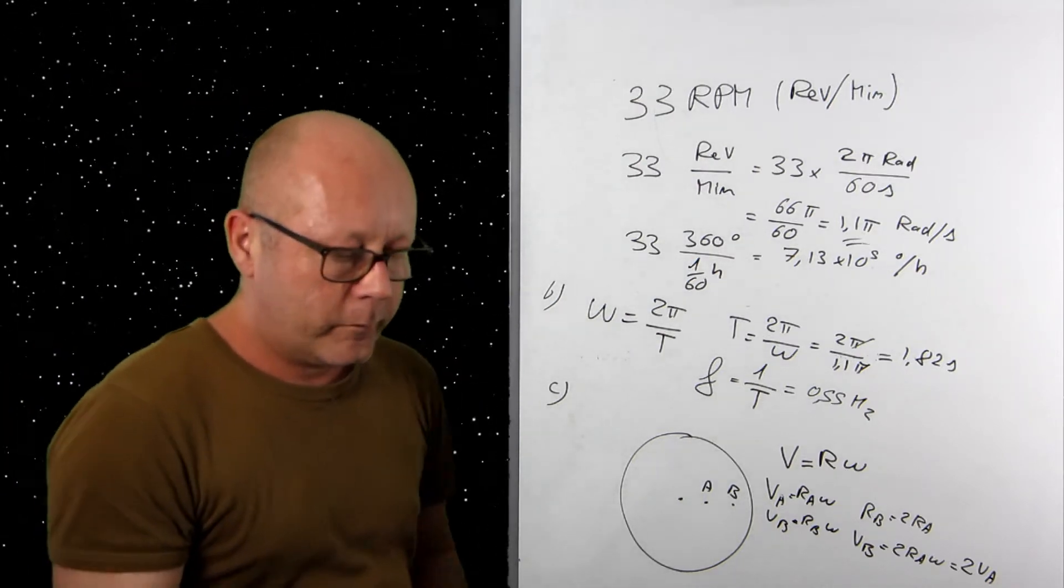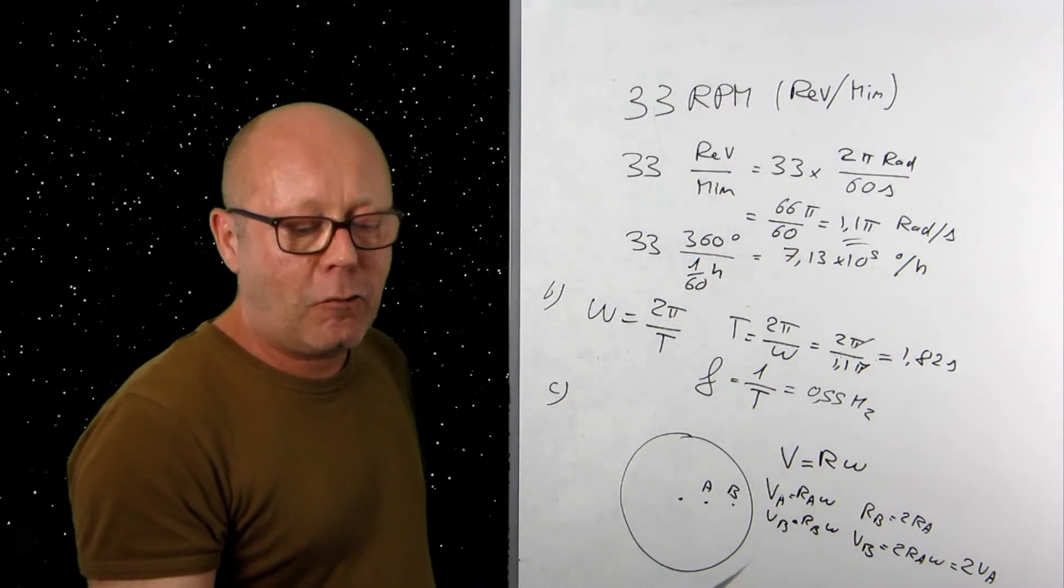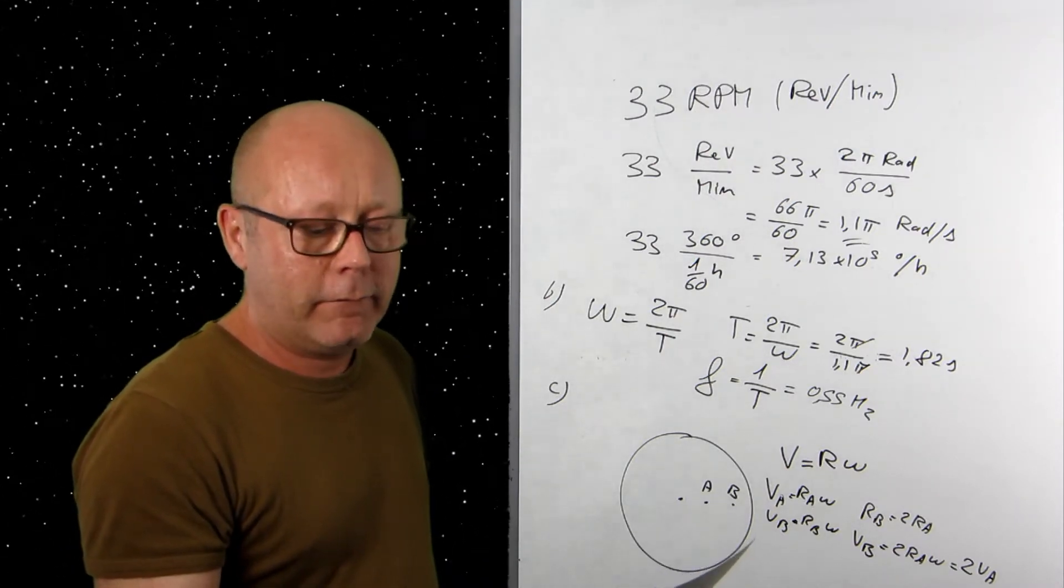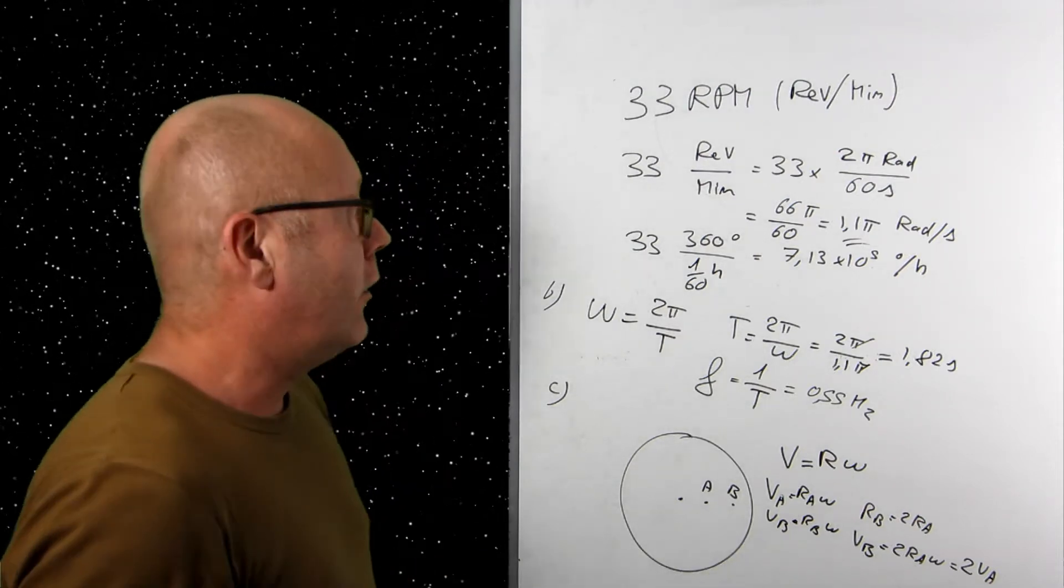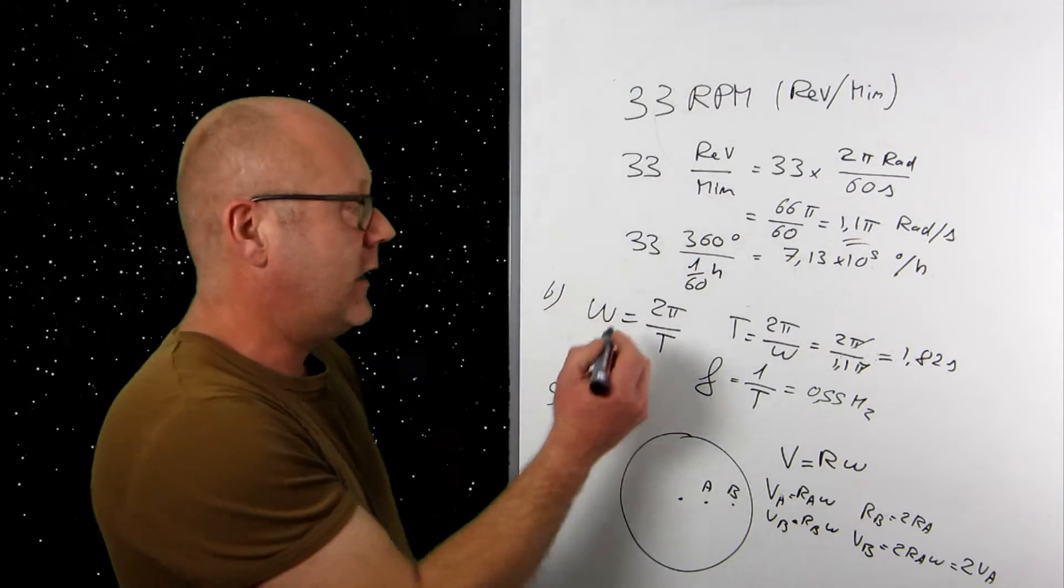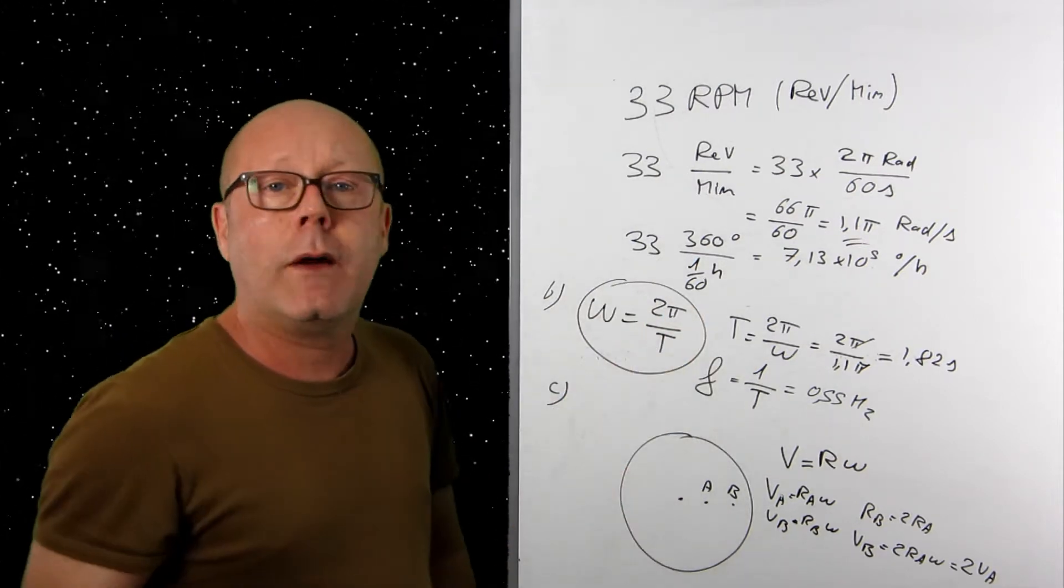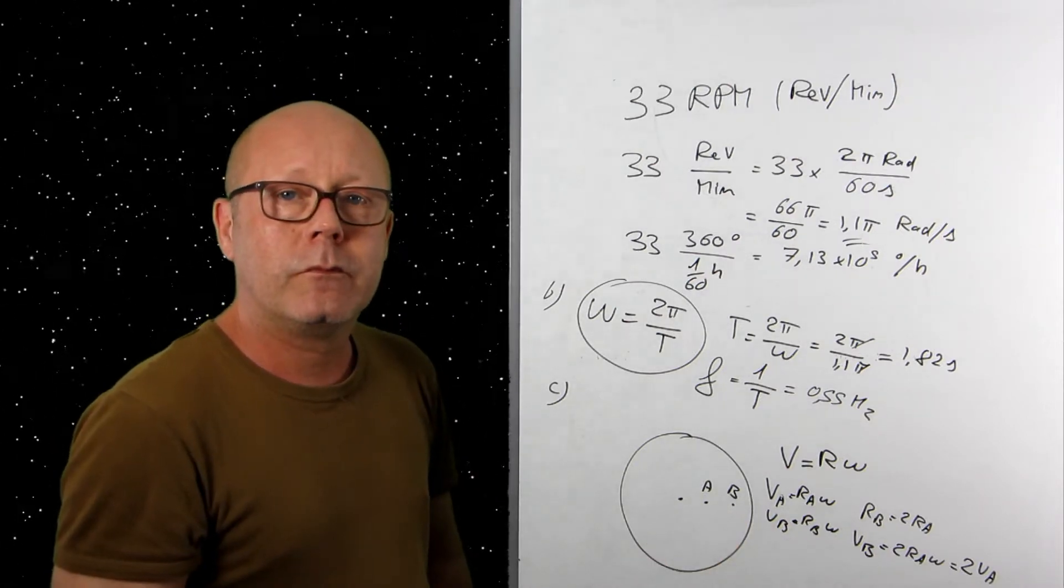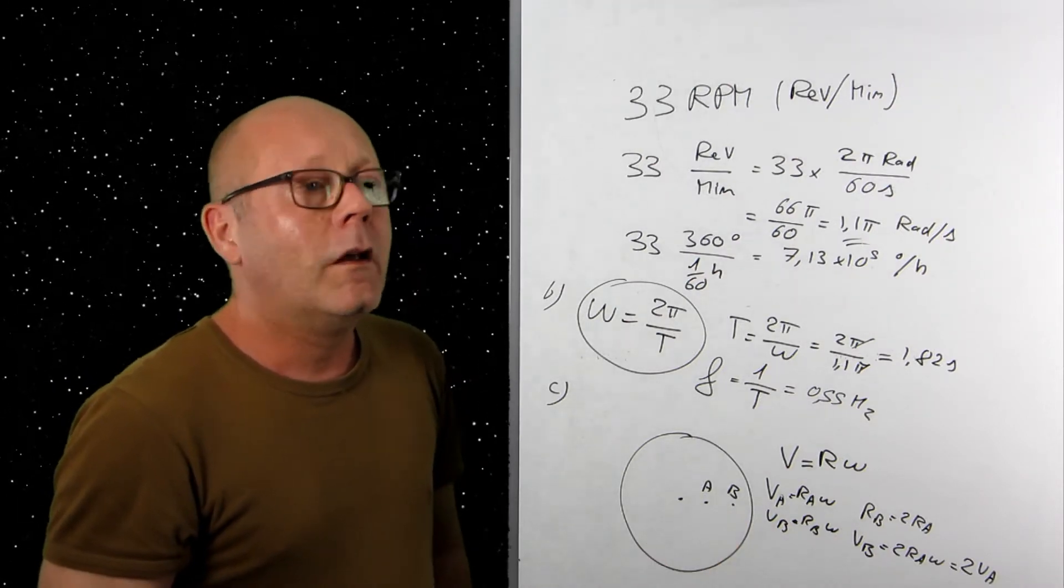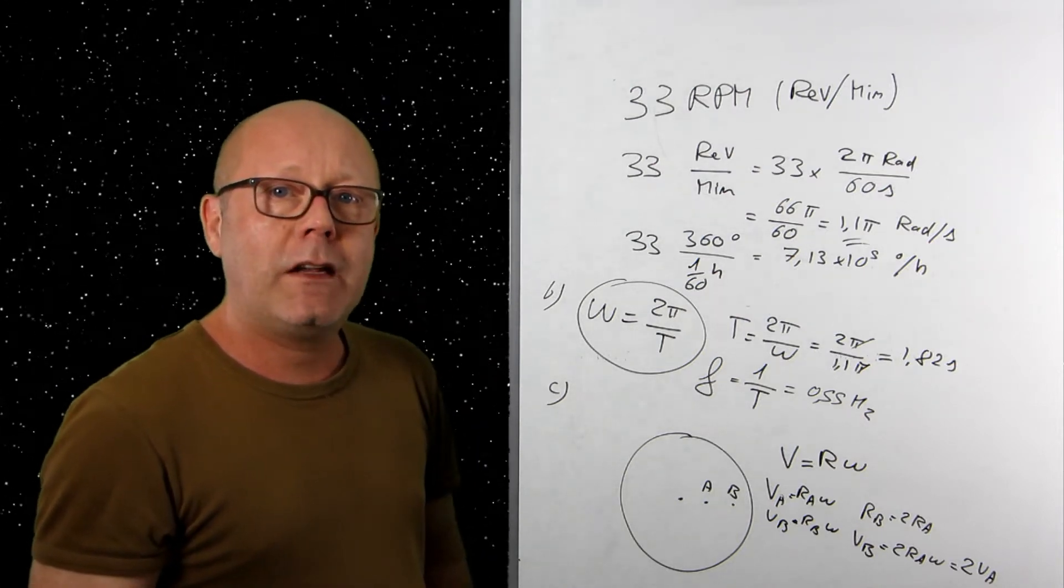The final question was, does the period of the motion of point A change compared to that of point B? And why? Well, no. Because the angular velocity is constant and ω equals 2π on T. Therefore, the period will also be constant whatever point you consider. Okay. You are ready for the second exercise. Here it comes.